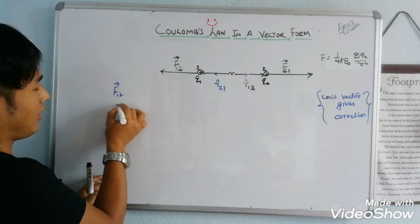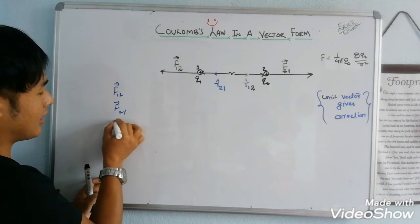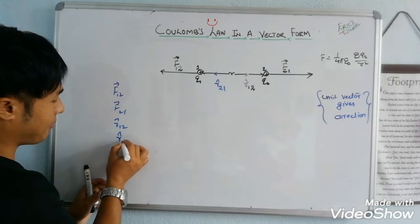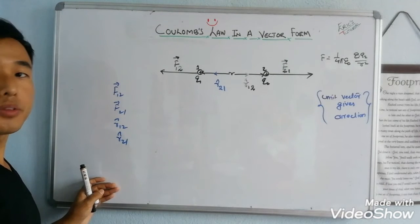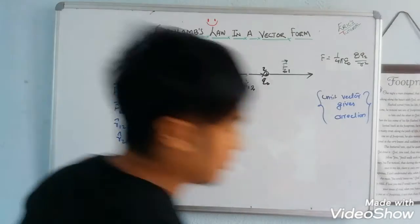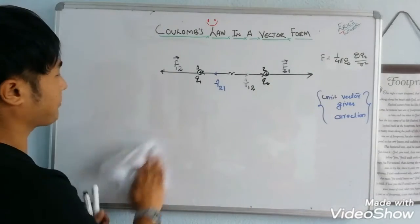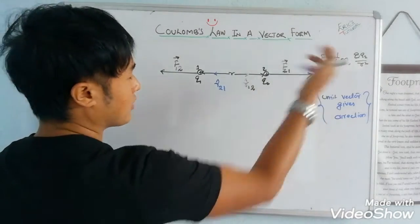So we have these terms: F vector 1,2, F vector 2,1, R cap 1,2, R cap 2,1. These are vector quantities. Now we need to write the force magnitude.